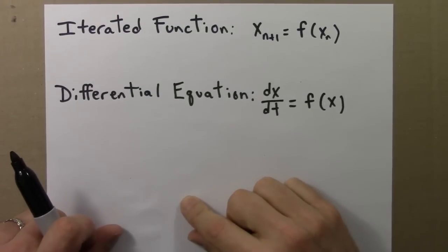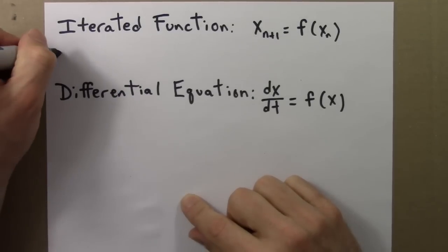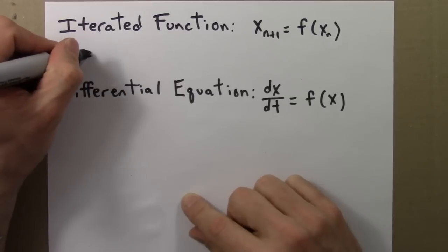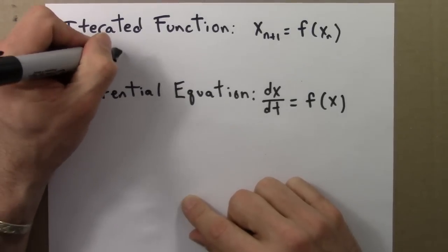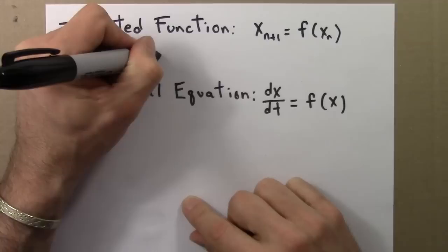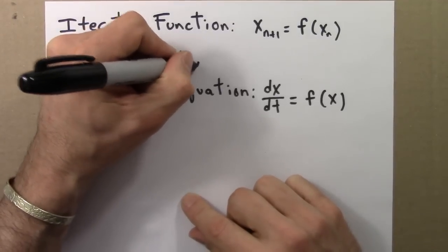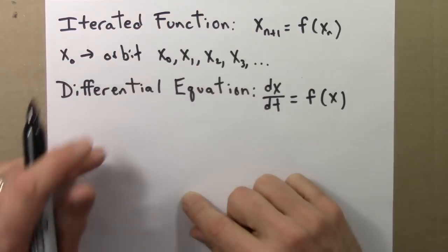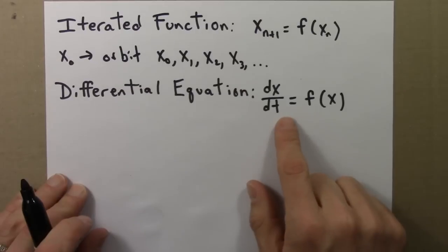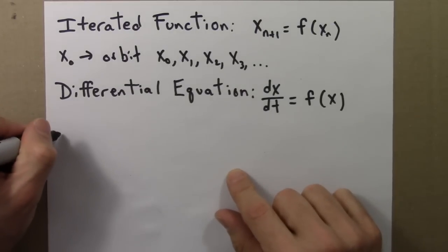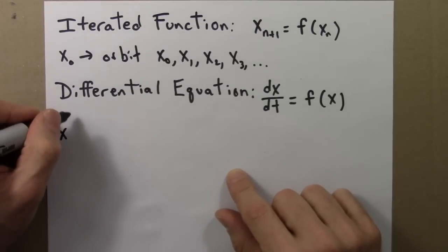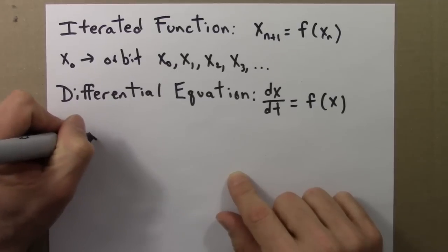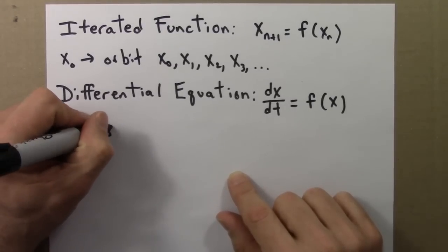When one solves an iterated function, one needs a seed. And from that, one can figure out the orbit: the first iterate, the second iterate, the third iterate, and so on. For the differential equation, you also need an initial condition, a starting point, which you could write as x_0 or you might write as x at time 0.